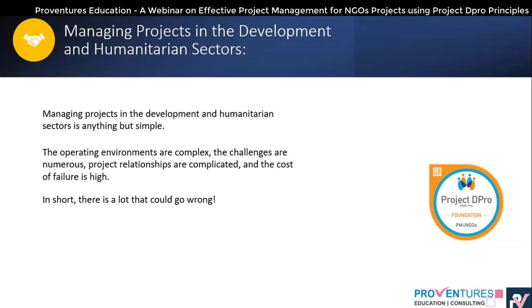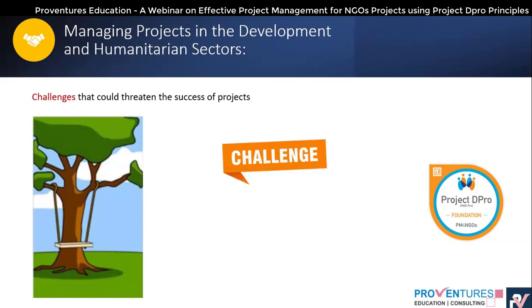Managing projects in development and humanitarian sectors sounds simple, but the operating environments are very complex with numerous challenges. Project relationships are complicated, people have to be managed, and costs are very uncertain. There is a lot that could go wrong once you start implementing, so the operating environments are very complex in nature.